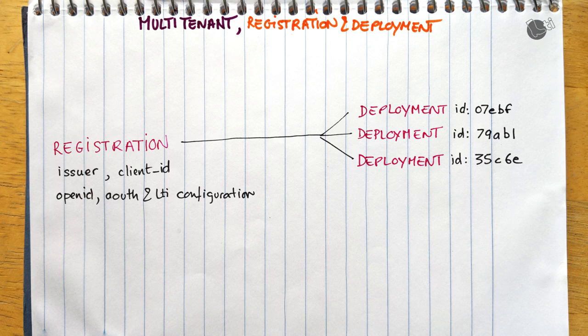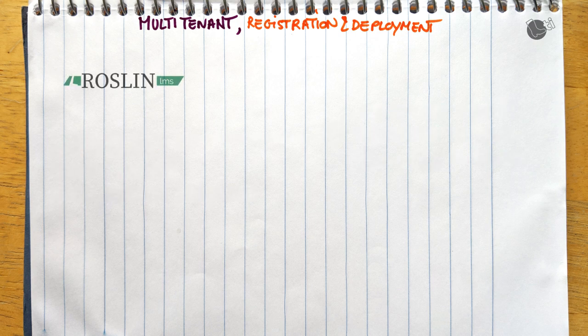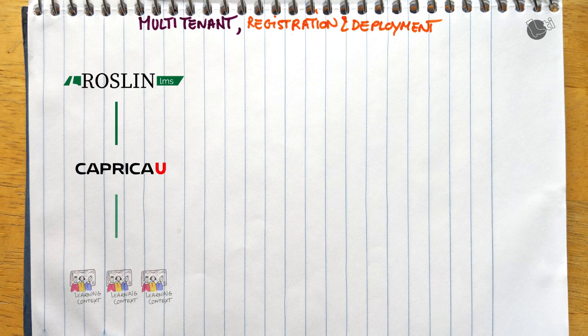Let's have a look with a fictional example of how this could be put in practice. Here we imagine a learning platform called RoslynLMS.com. RoslynLMS is a popular LMS in the cloud — it's a SaaS platform and has many customers. One of them is Caprica U, a prominent university with thousands of students and hundreds of classes. Then there is a well-known publisher called Cobalt 12, which offers various content and course activities — often used by RoslynLMS customers.